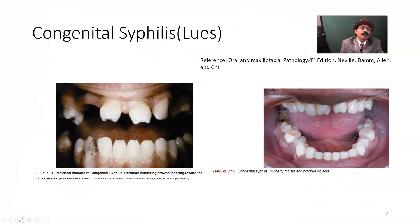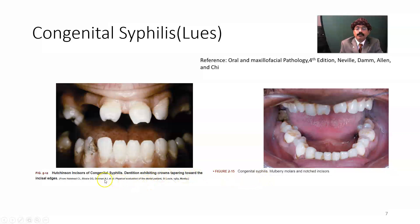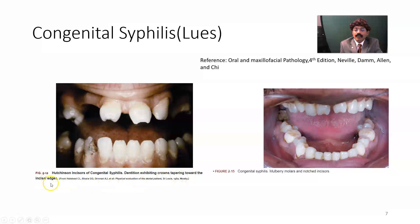We will go to congenital syphilis. In oral and maxillofacial pathology, fourth edition, it has been shown that our incisor teeth will have a notch-like appearance — these are Hutchinson's teeth, also called screwdriver teeth. We may also have mulberry molars and premolar teeth showing the mulberry shape appearance. The dentition of congenital syphilis exhibits crowns tapering towards the incisal edge.